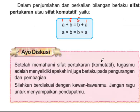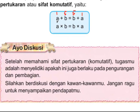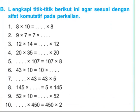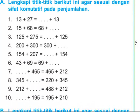Dengan demikian dapat disimpulkan bahwasannya yang punya sifat komutatif atau sifat pertukaran hanya penjumlahan dan perkalian. Sedangkan pembagian dan pengurangan tidak bisa dibolak-balik. Mudah-mudahan bisa dipahami. Kita akan lanjutkan lagi dalam video berikutnya tentang sifat-sifat yang lain. Tapi sebelumnya, coba kalian kerjakan dulu latihan ini. Nanti video ini di-pause, kemudian kita kerjakan.